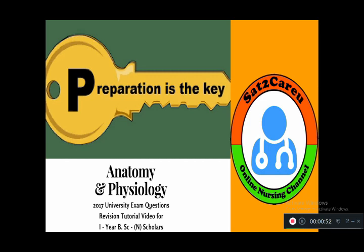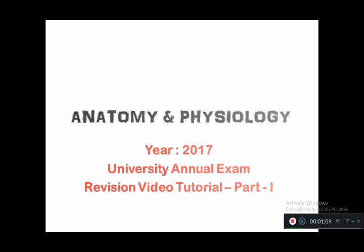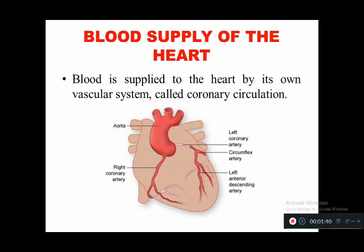In this video we have selected the 2017 anatomy and physiology question paper of UHSR ROTHEC. The anatomy part has four questions; the first part has three sub-questions: blood supply of the heart, types of muscle, and cranial nerves. The first two questions carry four marks each and the cranial nerve question carries six marks.